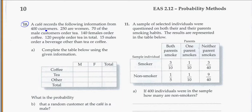A cafe records the following information from 400 customers, so that tells me its total. I have a total of 400 customers. 250 of them are women. So in the male and female categories I know that I have a total of 250 that are women.